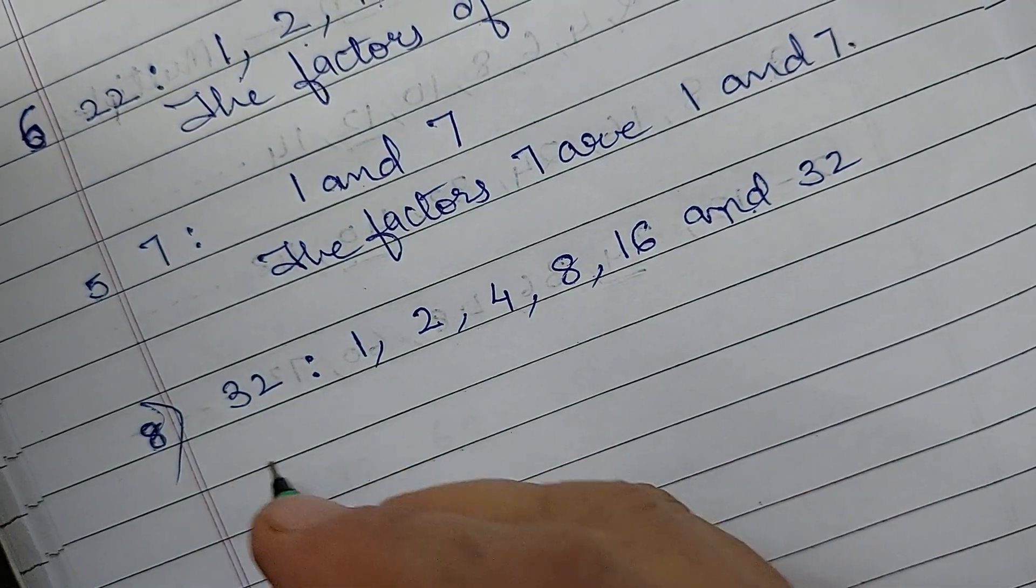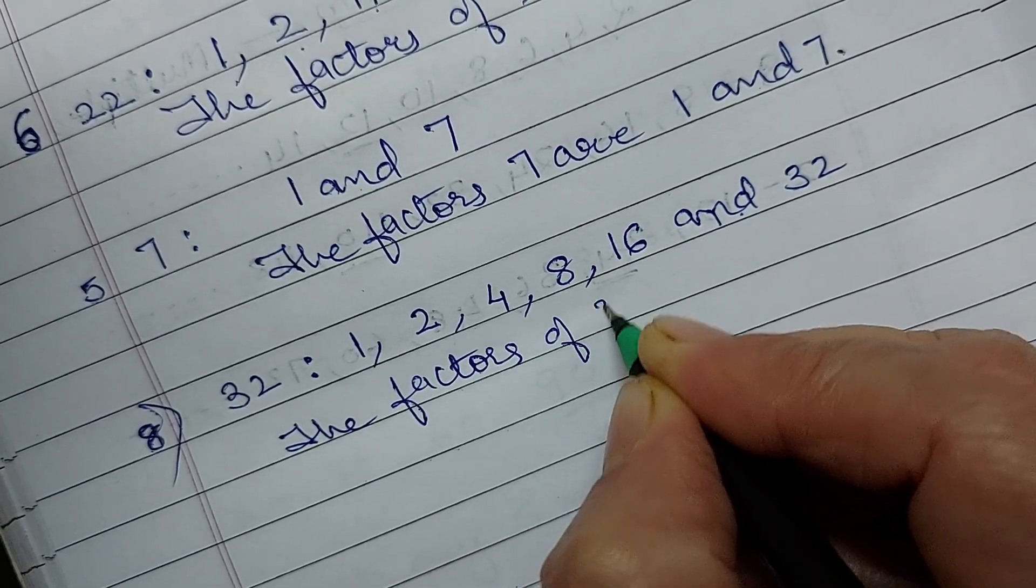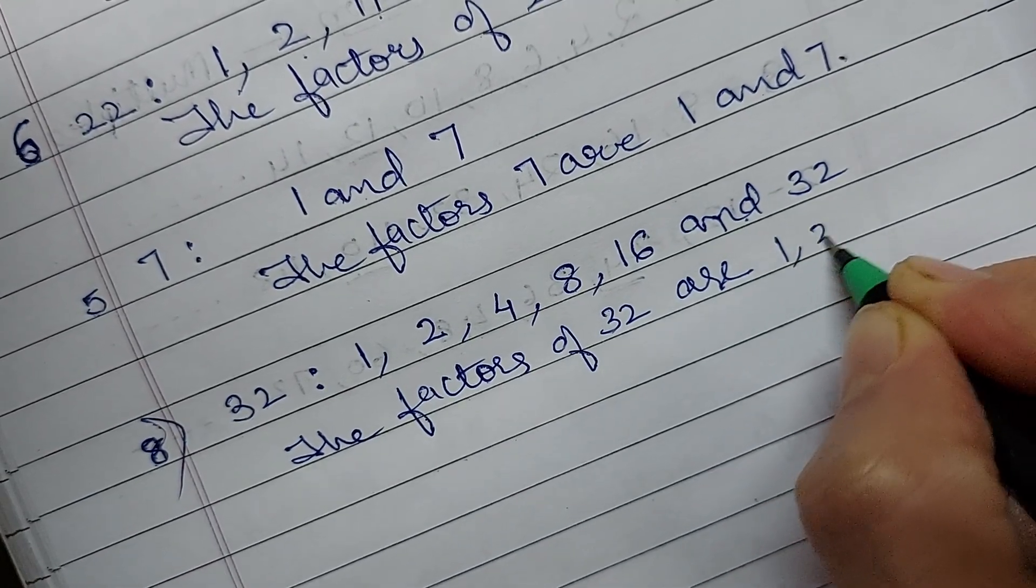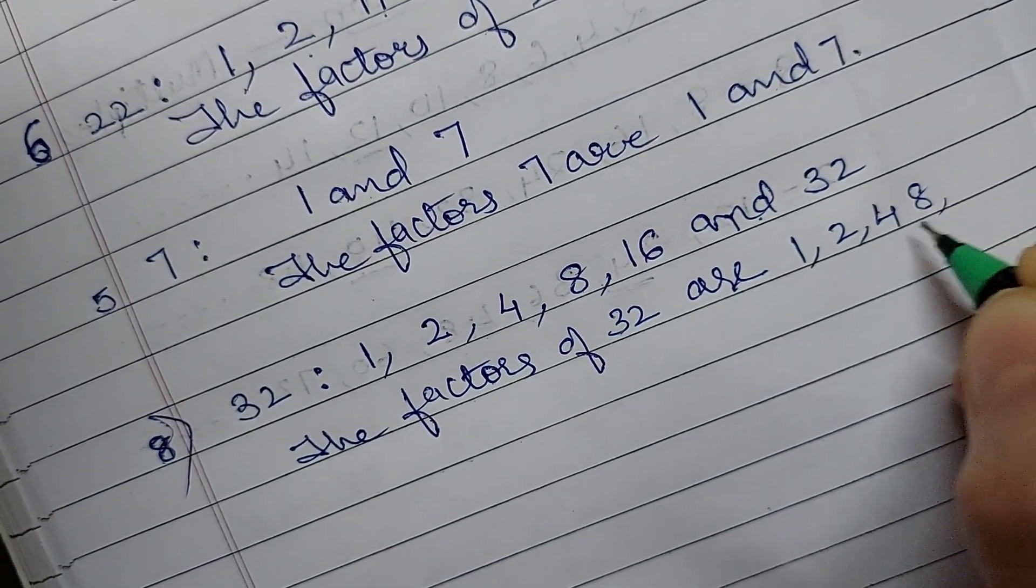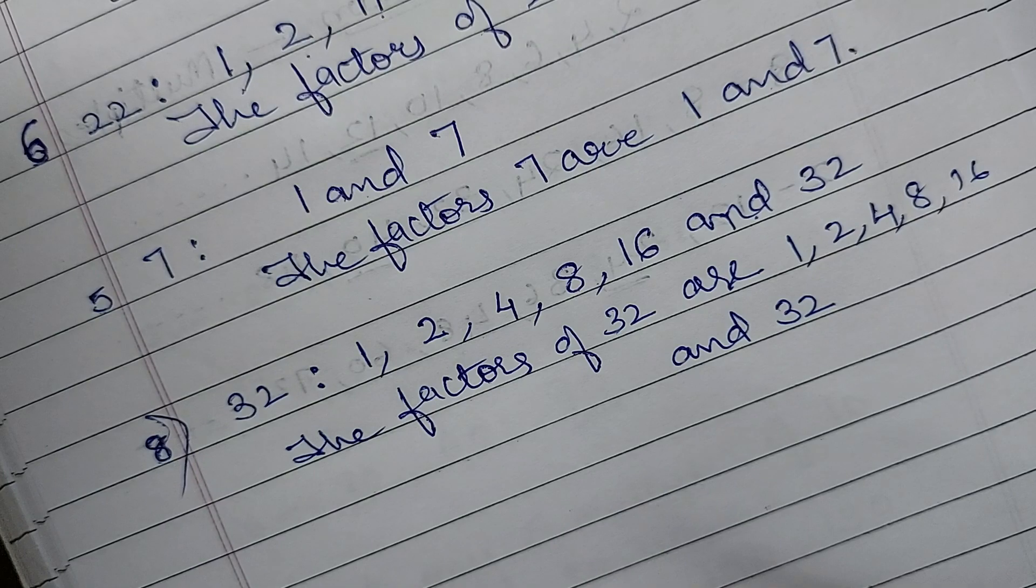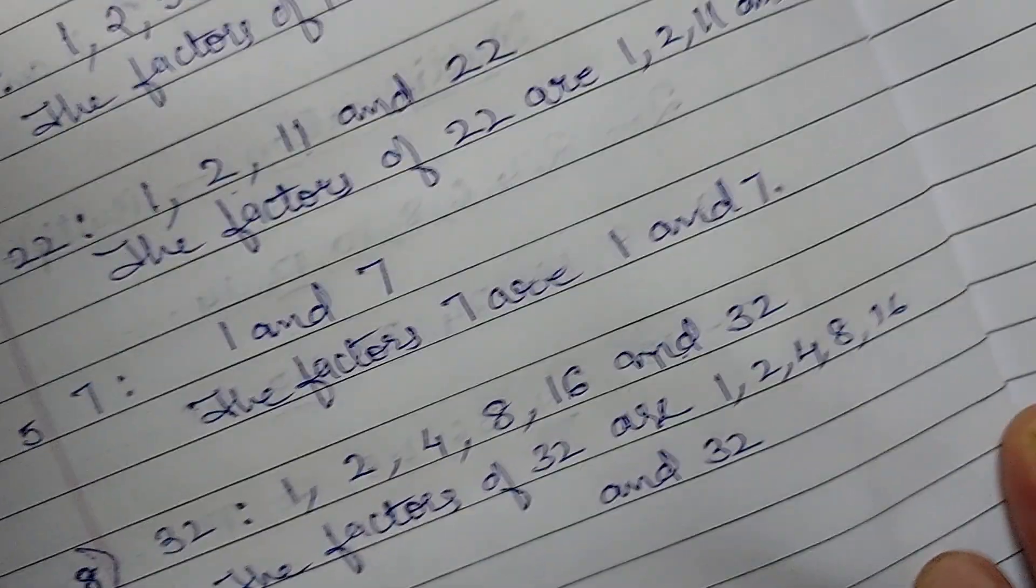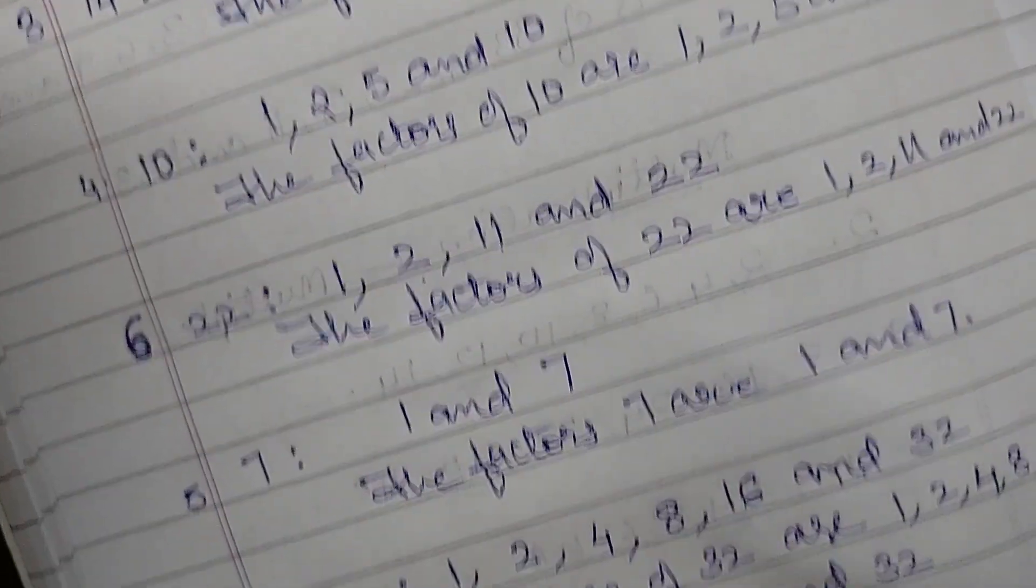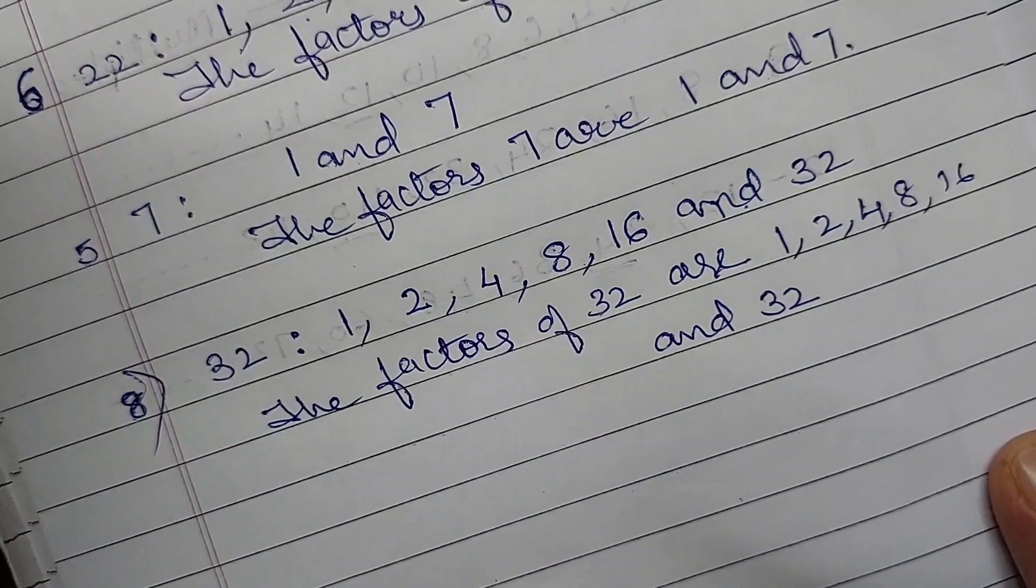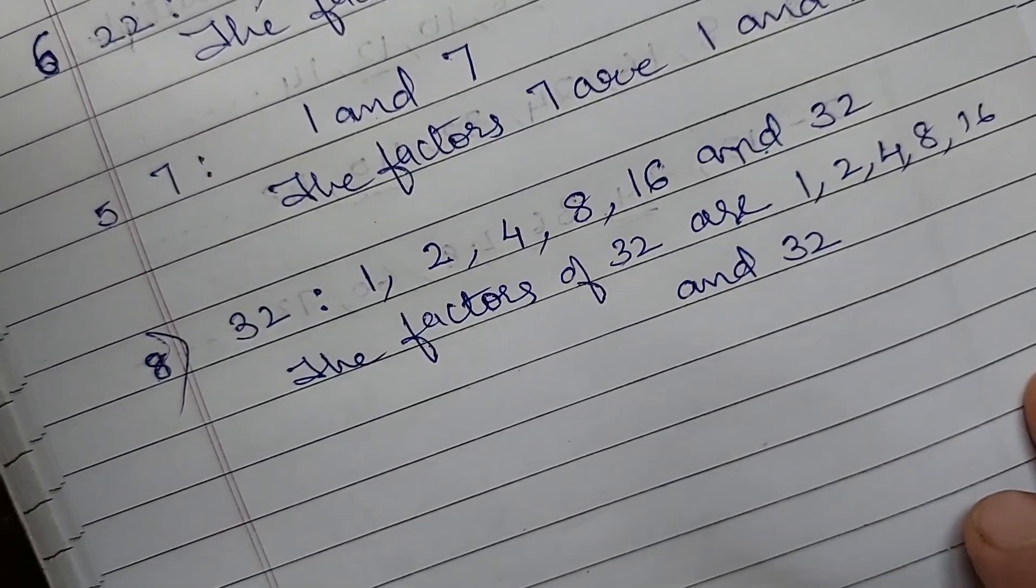So write the factors of 32 are 1, 2, 4, 8, 16 and 32. In this way you have to write all the factors. I hope children you all understood it. So by the time keep on learning the tables. If you learn the tables very well you can write this very quickly. Otherwise you will have to keep on calculating. So don't waste your time in that. Learn the tables well.